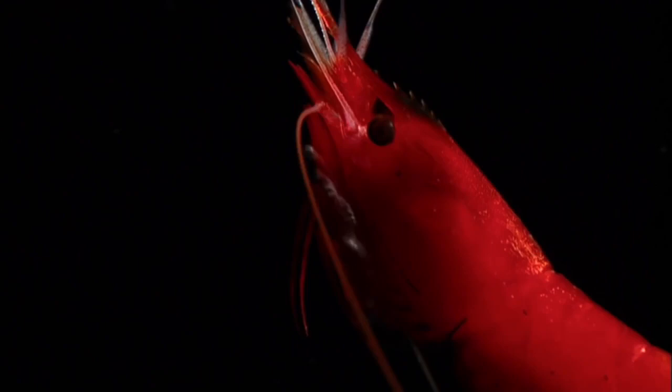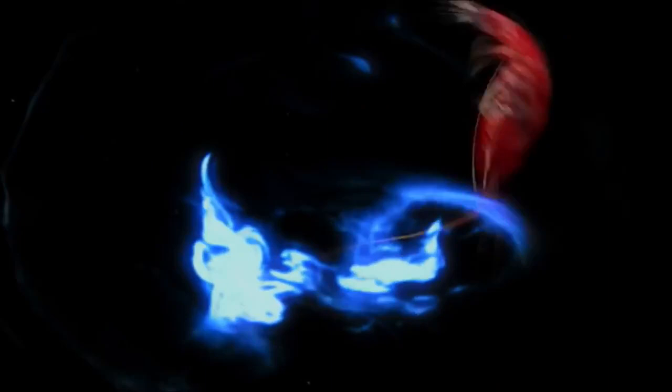But some shrimp are armed with their own light-filled defenses. When threatened, certain species shoot bright flashes of light to stun and confuse their enemies. There's a lot of animals that actually can release their luminescence that way. So you can have something like a shrimp that will spew luminescence out of its mouth like a fire-breathing dragon and temporarily blind its predator while it pulses away into the darkness.